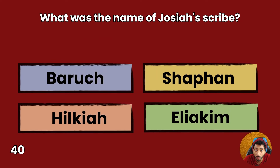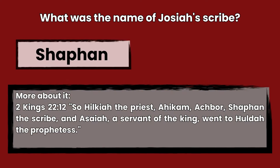Question 40: What was the name of Josiah's scribe? Baruch, Shaphan, Hilkiah, or Eliakim? Answer: Shaphan. 2 Kings 22:12 — So Hilkiah the priest, Ahikam, Akbor, Shaphan the scribe, and Esaiah a servant of the king, went to Huldah the prophetess.